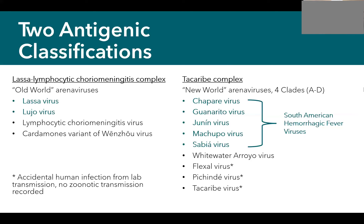Out of the 13 Arena Viruses that cause human disease, these are subdivided into two complexes: the Lassa/lymphocytic choriomeningitis complex and the Tacaribe virus complex, also referred to as old-world and new-world Arena Viruses. There are four old-world Arena Viruses that cause human disease, but today we'll focus on Lassa and Lujo viruses. From the new-world group, we'll cover Chapare, Guanarito, Junin, Machupo, and Sabia viruses — collectively known as the South American hemorrhagic fever viruses.